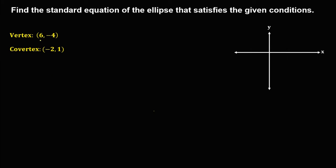From the vertex, x is positive 6 and y is negative 4, so we plot that coordinate. Then from the co-vertex, x is negative 2 and y is positive 1. So we now have both the vertex and co-vertex plotted on the graph.